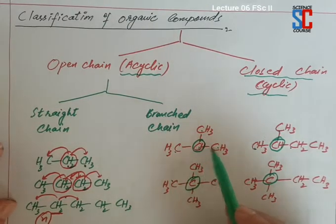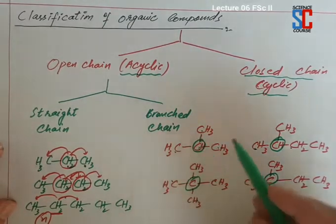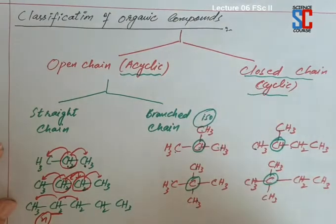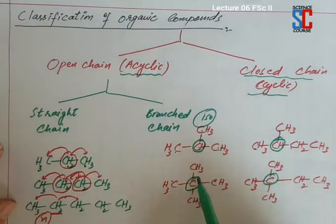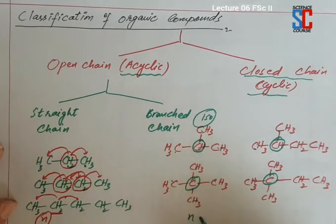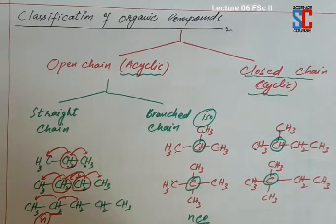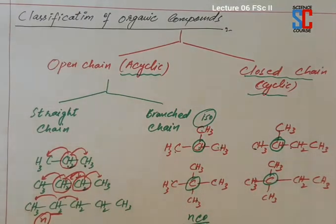When one carbon atom is directly attached with 3 carbon atoms, then we use the prefix 'iso' before the name. When there are 4 carbon atoms attached with one carbon atom directly, then we use the prefix 'neo' with the name — name ke saath prefix laga denge. Prefix hota hai name se pehle, aap neo ka word add kar denge.